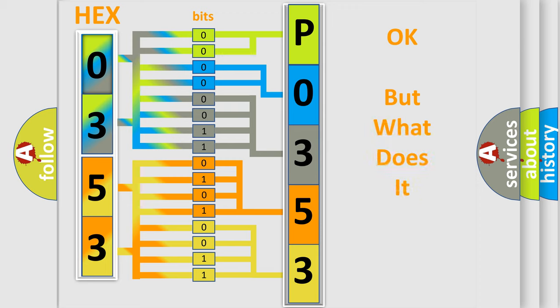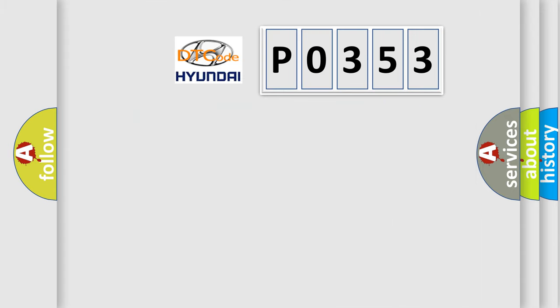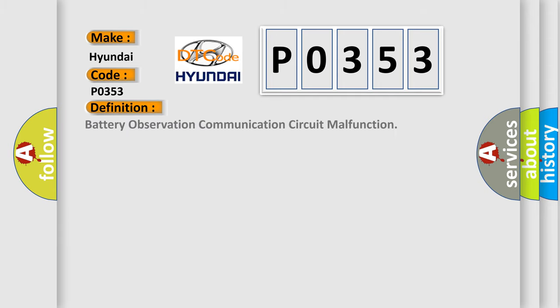We now know in what way the diagnostic tool translates the received information into a more comprehensible format. The number itself does not make sense to us if we cannot assign information about what it actually expresses. So, what does the diagnostic trouble code P0353 interpret specifically for Hyundai car manufacturers? The basic definition is: battery observation communication circuit malfunction.